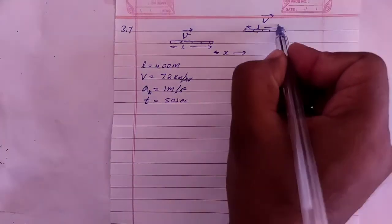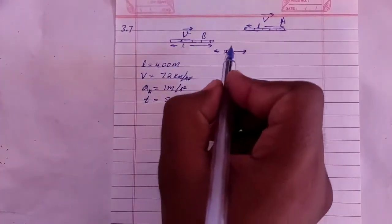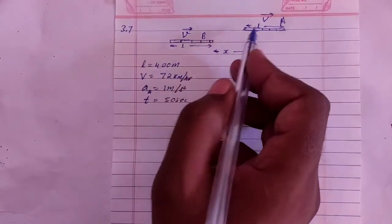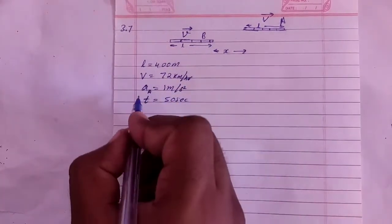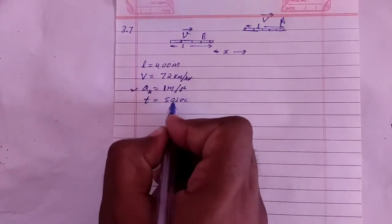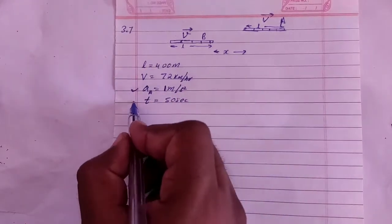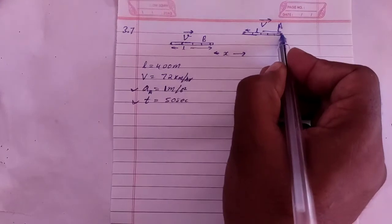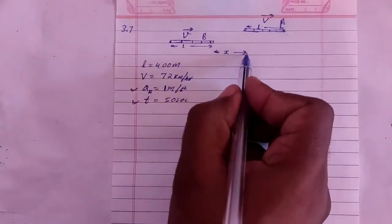So here we have train A and train B is behind it. Train B is x distance behind train A. Both have the same speed and are on parallel tracks in the same direction. B decided to overtake A, so B accelerated at 1 meter per second square. We are asked: after 50 seconds, the guard of B crosses the driver of A — what was the original distance between them?